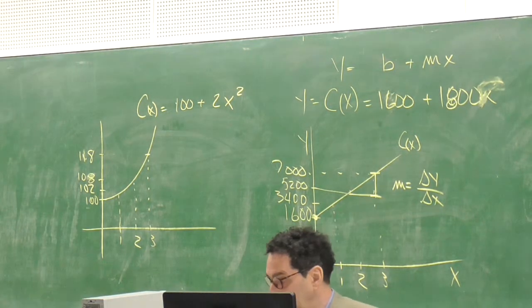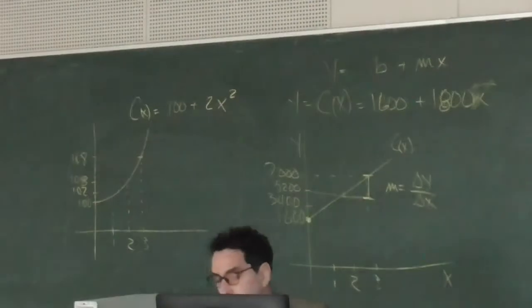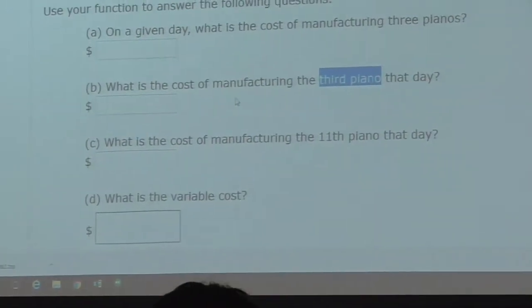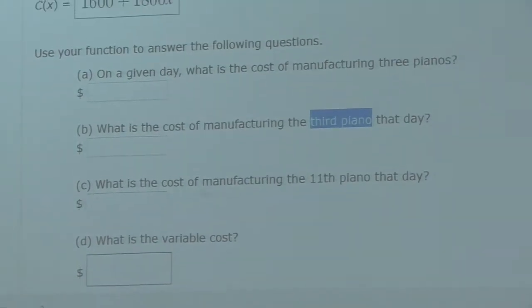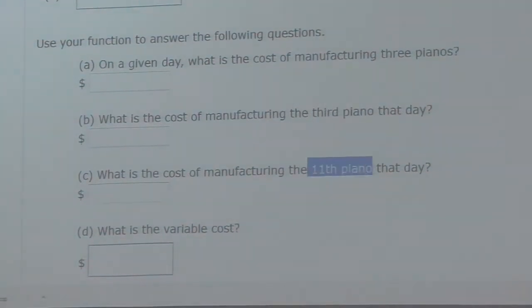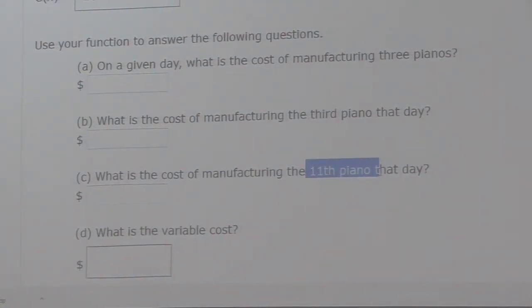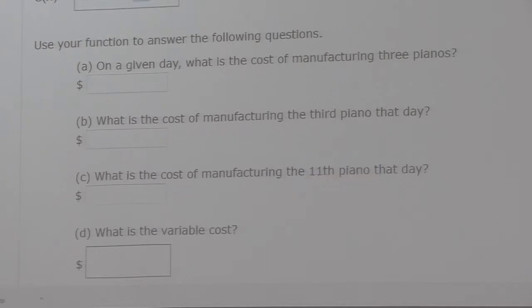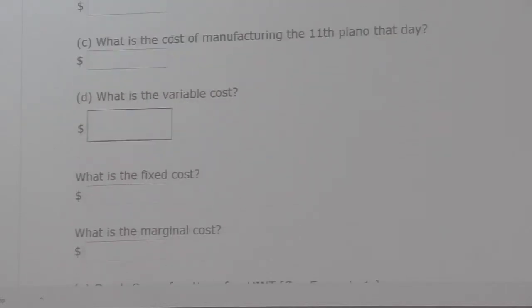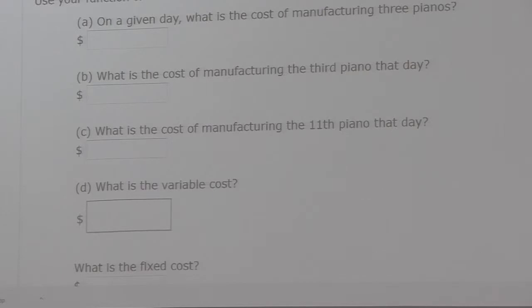What is the cost of manufacturing the 11th piano? Do they want the total cost or the marginal cost? Marginal cost. Since this is linear, you don't have to do much — it's going to be $1,800. But if it's not linear, you don't know that. What is the variable cost? The same thing, it's $1,800. What is the fixed cost? $1,600.